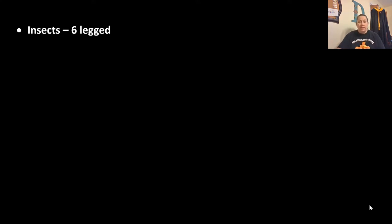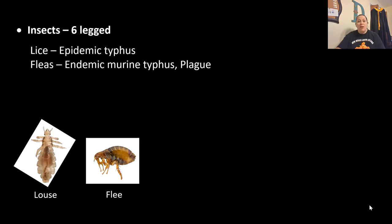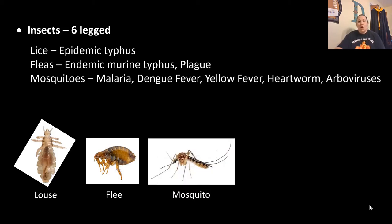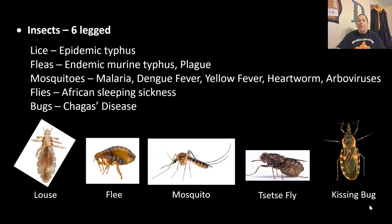Insects have six legs. Lice can cause epidemic typhus. Fleas can cause endemic murine typhus or even plague. Mosquitoes carry malaria, dengue fever, yellow fever, heartworm, and arboviruses. Flies that bite — like the tsetse fly — carry African sleeping sickness. Other bugs like the kissing bug can carry Chagas disease.